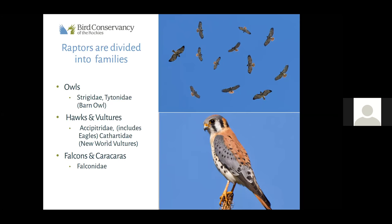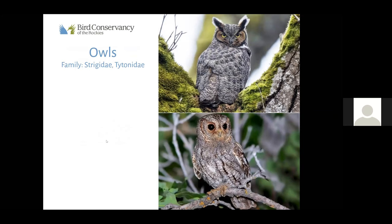Moving on to owls — we all know them, whether from Harry Potter or Halloween. They are quite magical and mysterious birds. Please use the chat window: what are some characteristics you think of when you think of owls? The two owls watching you are a great horned owl on top and a flammulated owl — or as some lovingly call it, the flam flam — on the bottom. Answers coming in: big eyes, silent flight, owl pellets, asymmetrical skull, heads turn around, disc face, good hearing.